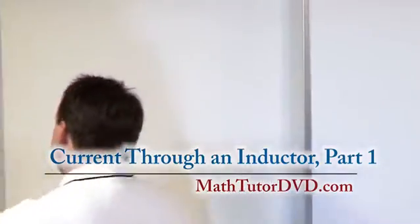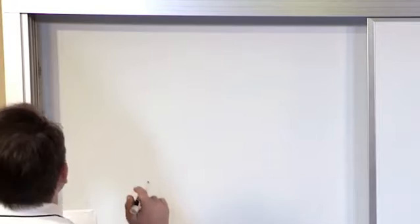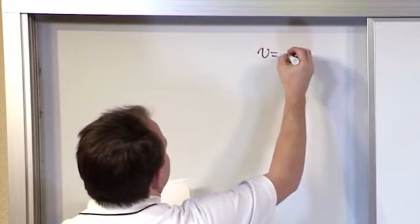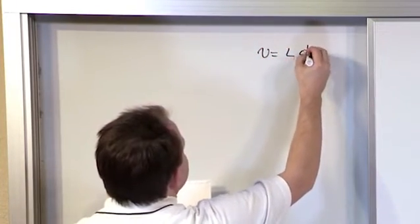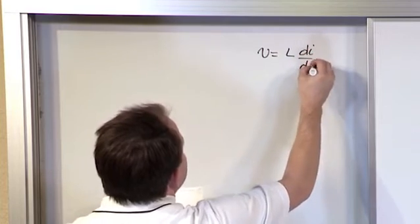Before, we talked about the incredibly important relation that the voltage across the inductor was equal to L di dt, the rate of change of the current.